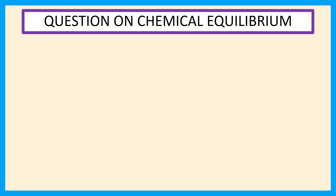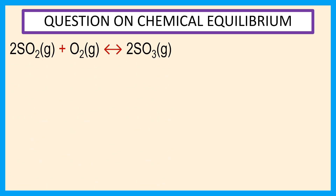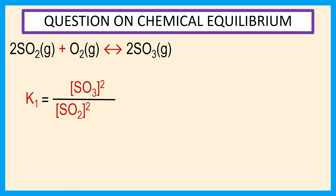Our first reaction is 2 SO₂ gas plus O₂ gas reversible to 2 SO₃ gas. The equilibrium constant for this reaction is K1 equal to the square of the concentration of SO₃, divided by the square of the concentration of SO₂ multiplied by the concentration of O₂.